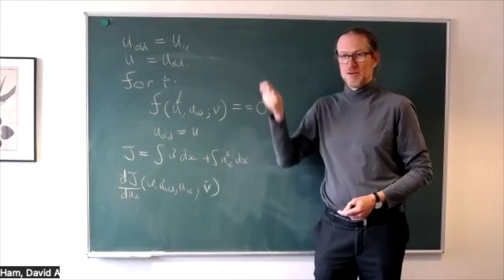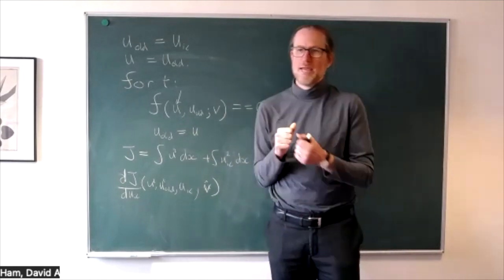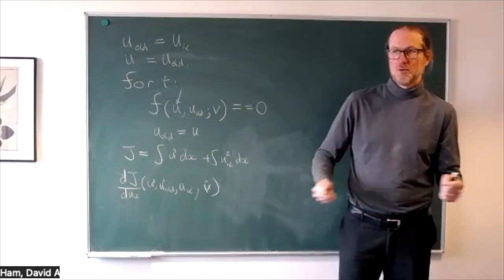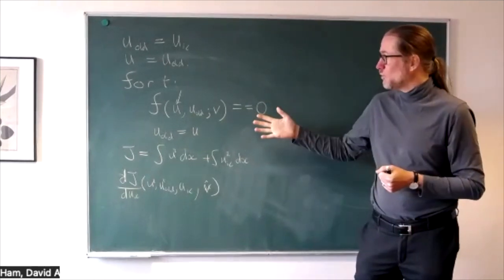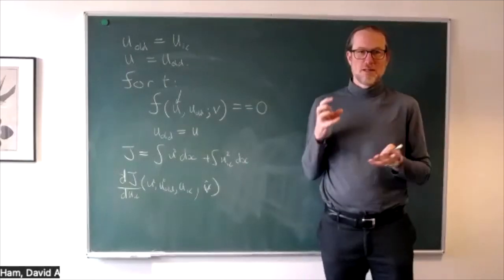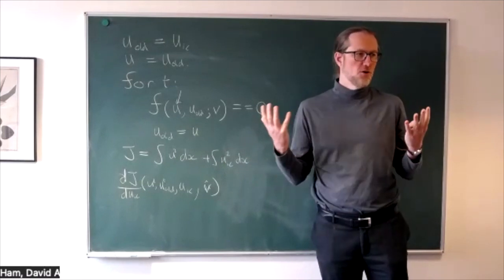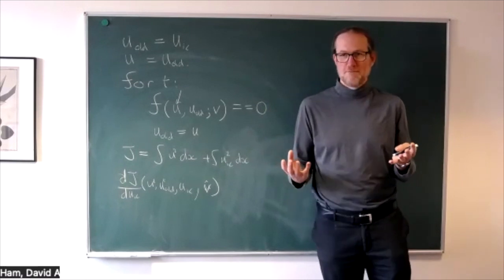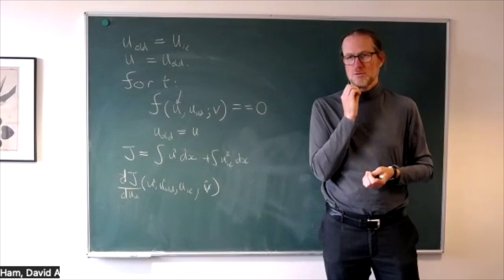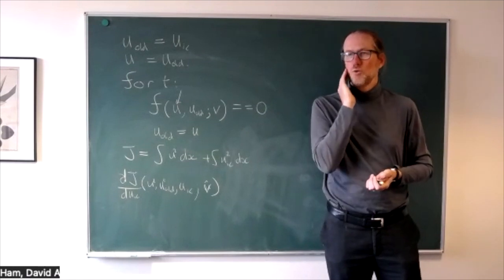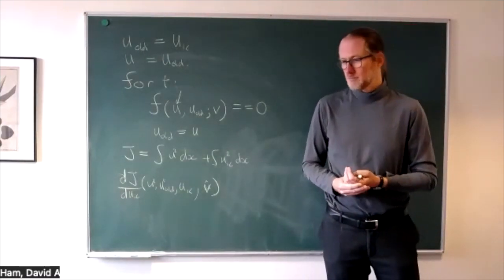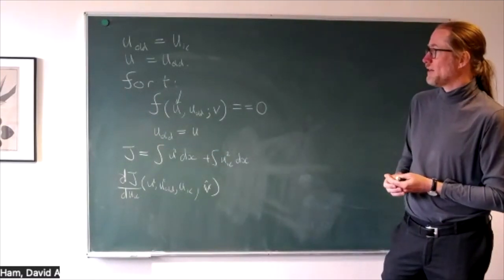U and U_old are program variables that keep changing over time. This is where we hit a big difference between the way we normally think about maths and the way you think about an imperative language like Python, C, or Fortran. Mathematically, symbols have a meaning — they have one value. Whereas in an imperative language, we use variables as references to bits of computer memory, which contain whatever they happen to currently contain, and a while later they might contain something else. In order to mathematically reason about this program, what we need to do is unwrap that. In computer science, and especially in the world of compilers, what they talk about is SSA form.